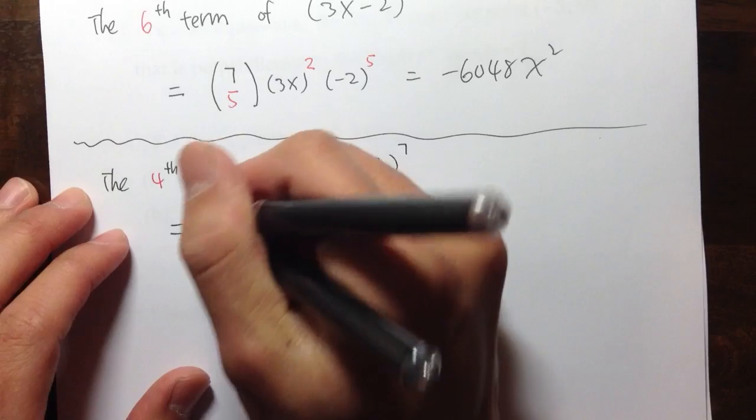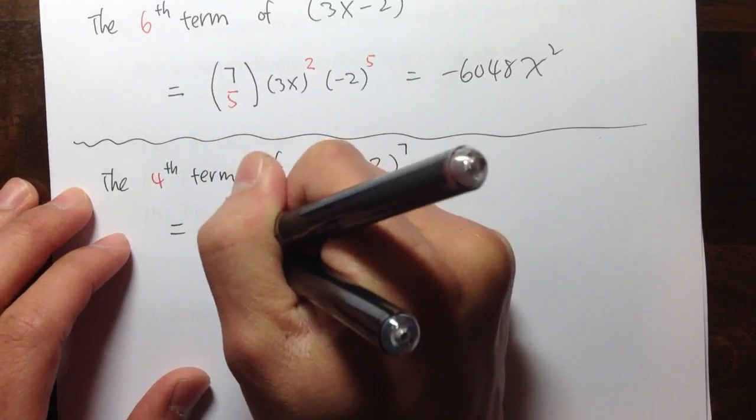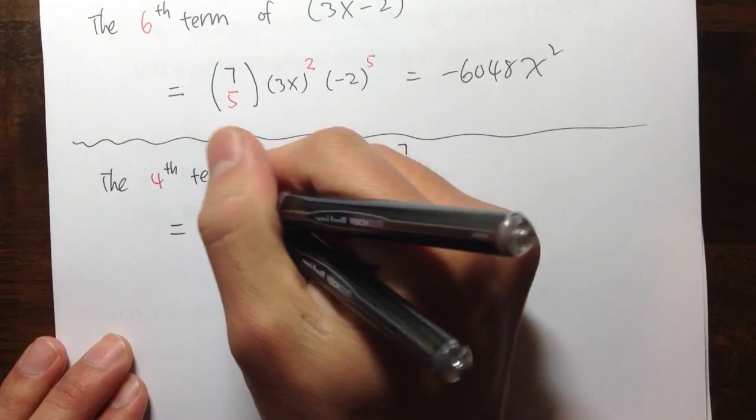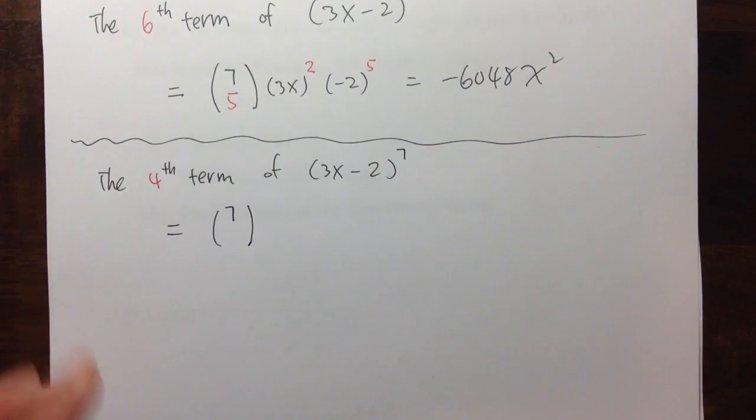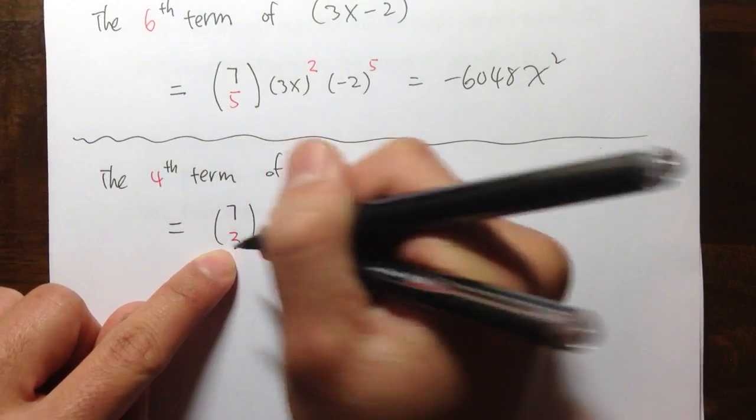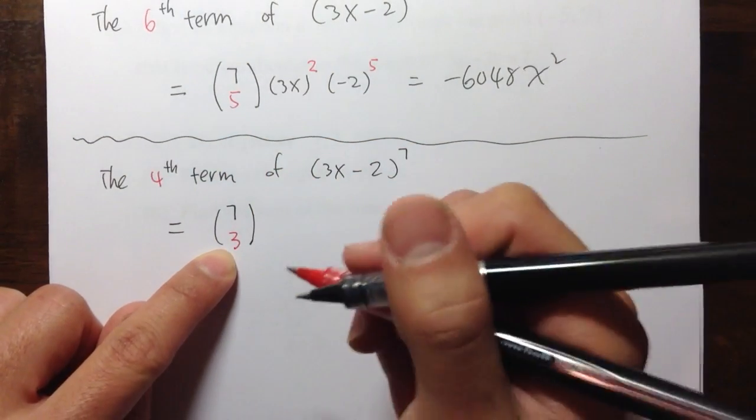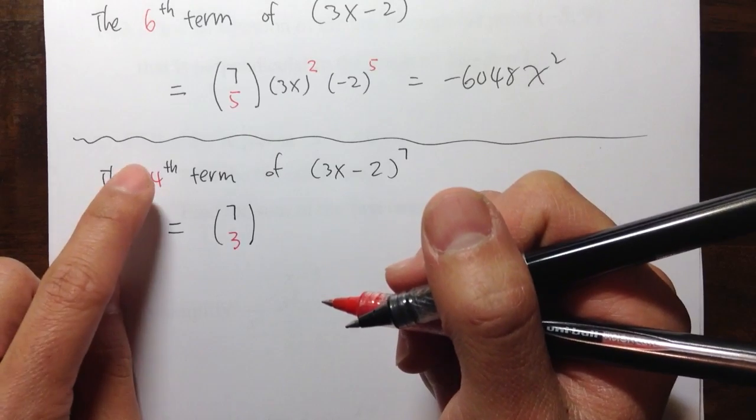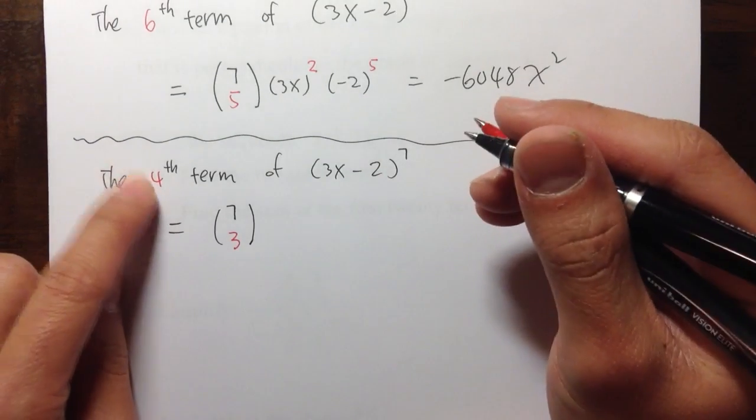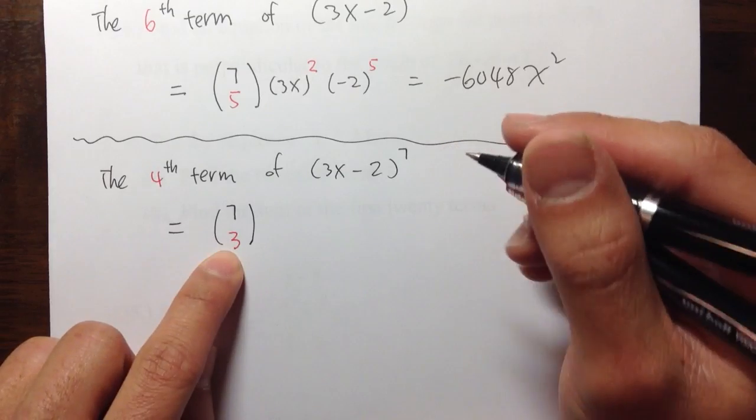Okay. So, start off with the binomial coefficient. Since the original exponent is 7, I'm going to put a 7 right here. The question is asking us to find the 4th term. But, I'm going to put a 3 right here. Make sure that, make sure that, make sure that, minus 1. Take away 1 from the question. Right? The question is asking for 4. You take away 1. And you put 3 right here.